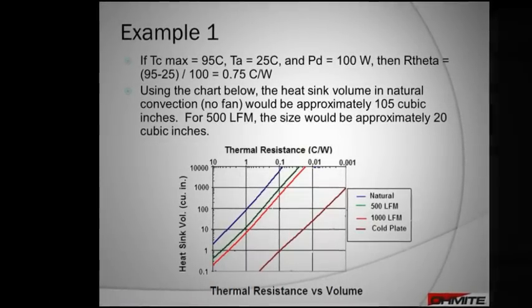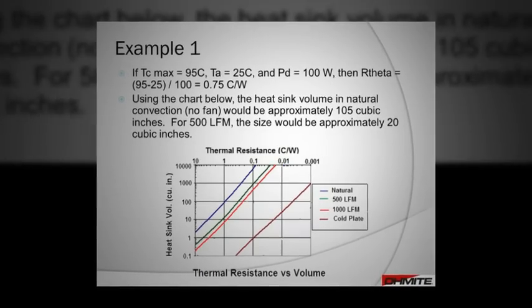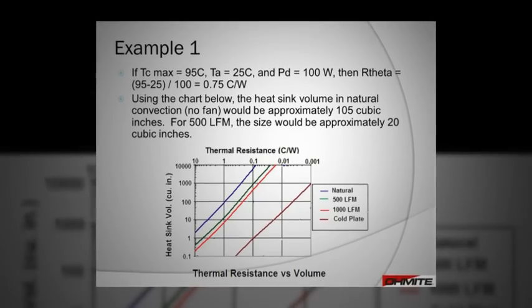When this value is applied to the chart, you find that in natural convection, you would require a heat sink of approximately 105 cubic inches. You would only require 20 cubic inches when forced air is applied.